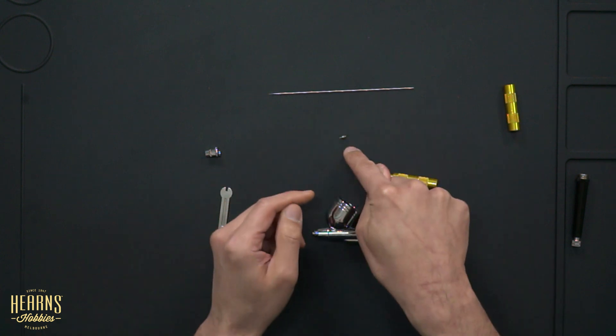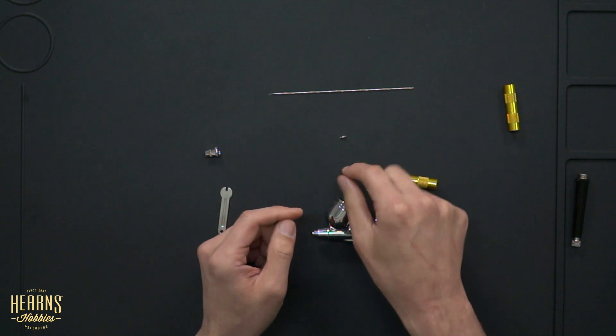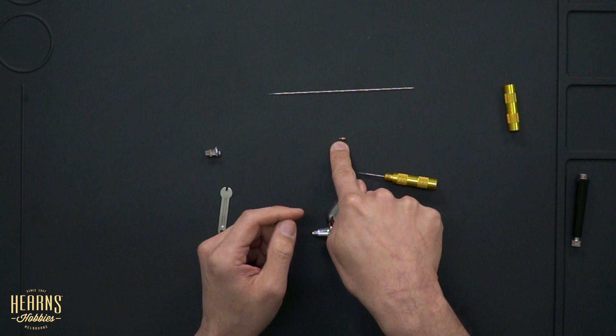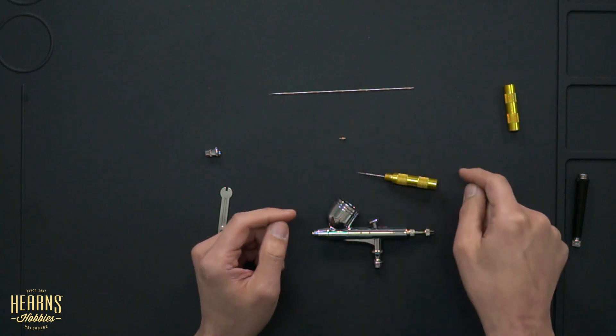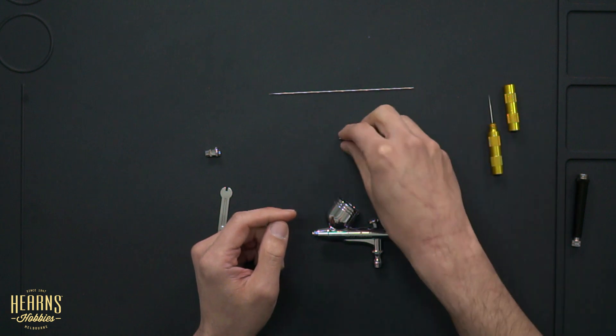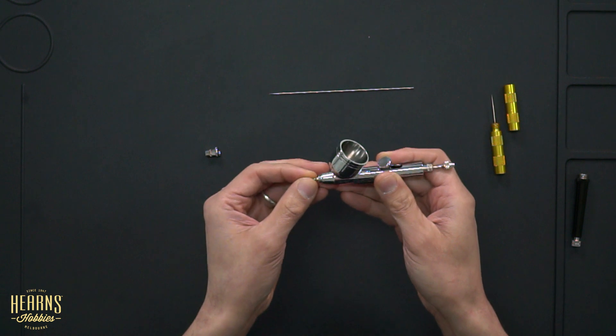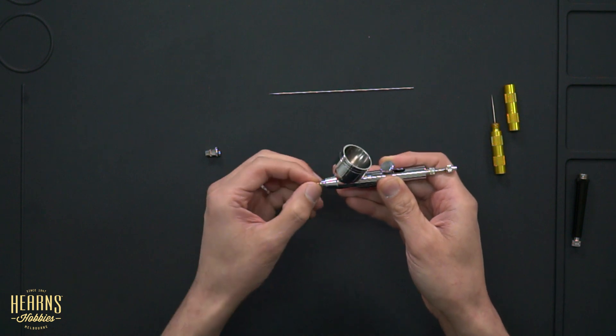You put the nozzle into some thinner or some water, depending on the paint you're using. Flush it out. It'll be good to just put this up to your lips and blow through the opposite side as well, in case there's any fine debris left in there. And then once that's done, it's just a matter of reassembling your airbrush. So we start off by tightening it up by your fingers.